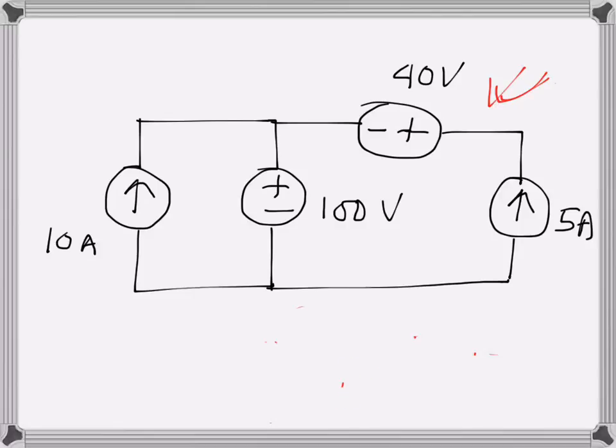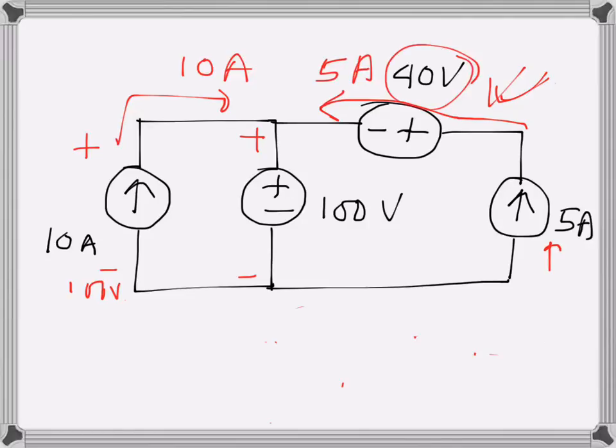So what I first notice is this is a 100 volt source here, so this voltage is also 100 volts—the voltage across the 10 ampere current source. And this current is 10 amperes here, and here we have a 5 ampere current source so the current through this branch is 5 amperes as well. So this one's current is 5 amperes.